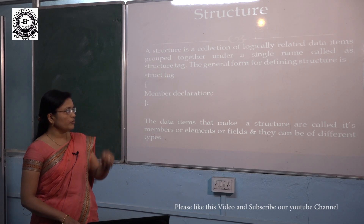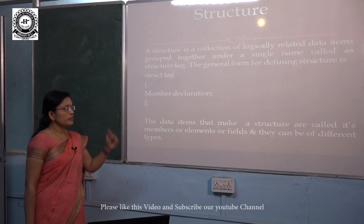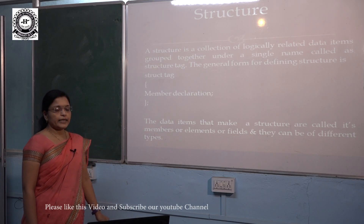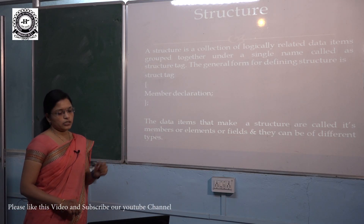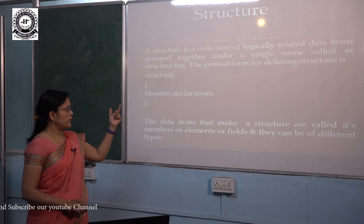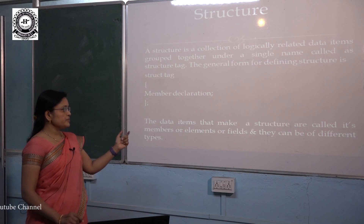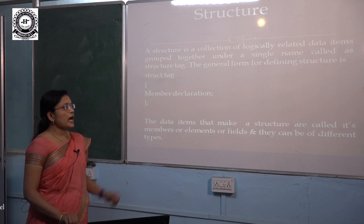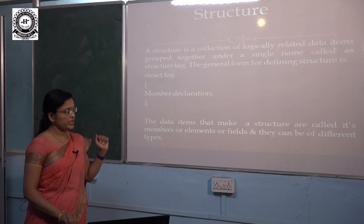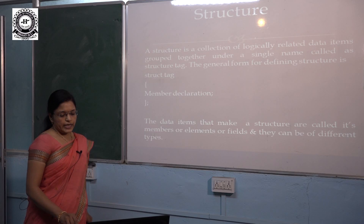The general form for defining a structure is: we require the keyword struct, then a tag name, and inside the curly braces we have to declare all the members required for that particular structure. The data items that make a structure are called its members, elements, or fields, and they can be of different types.